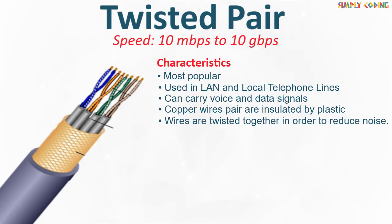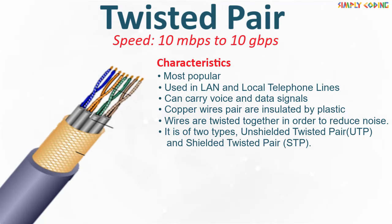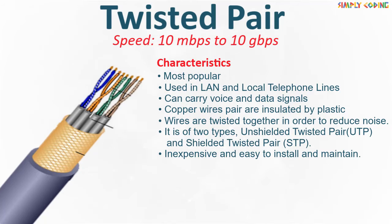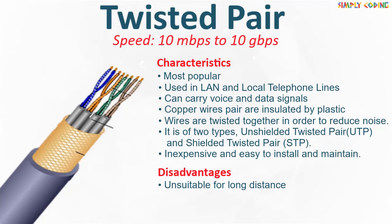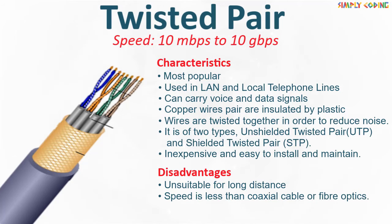The wires are twisted together in order to reduce noise. The electrical disturbance that can degrade communication is called noise. It is of two types: unshielded twisted pair (UTP) and shielded twisted pair (STP). Twisted pair is comparatively inexpensive and easy to install and maintain. Its disadvantage is that it is unsuitable for long distances, and its speed is less than coaxial cable or fiber optics.